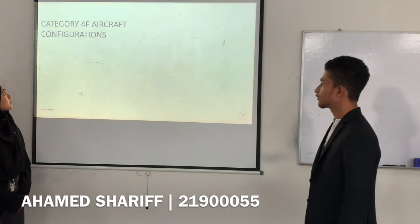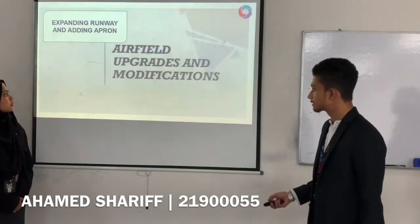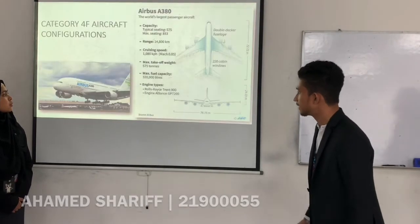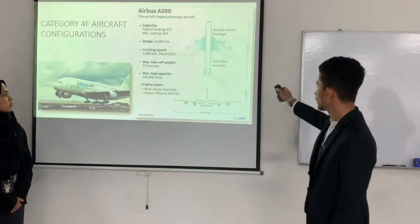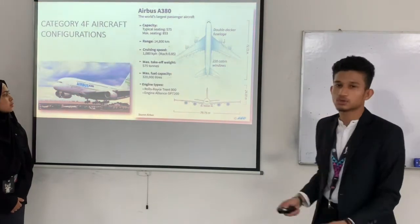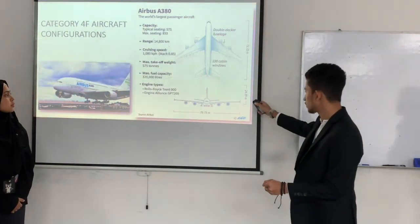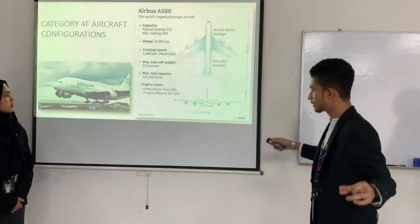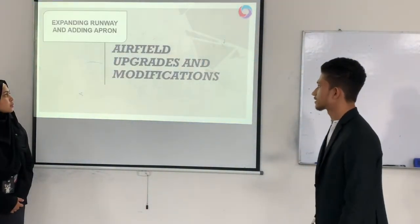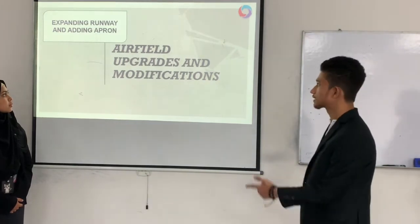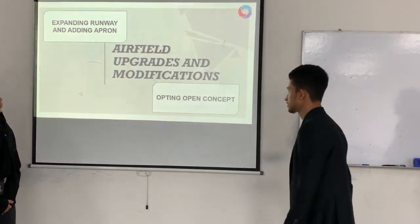Let's look at the Code F aircraft basic configuration. Taking the Airbus A380 as an example — it has a length of 72.72 meters and a height of 24.09 meters. The upgrades and modifications consist of two elements: expanding the runway and the apron level, and also adopting an open concept. Expanding the runway and having new aircraft is especially needed for the Code F aircraft, and the open concept is a new concept being added to the apron.